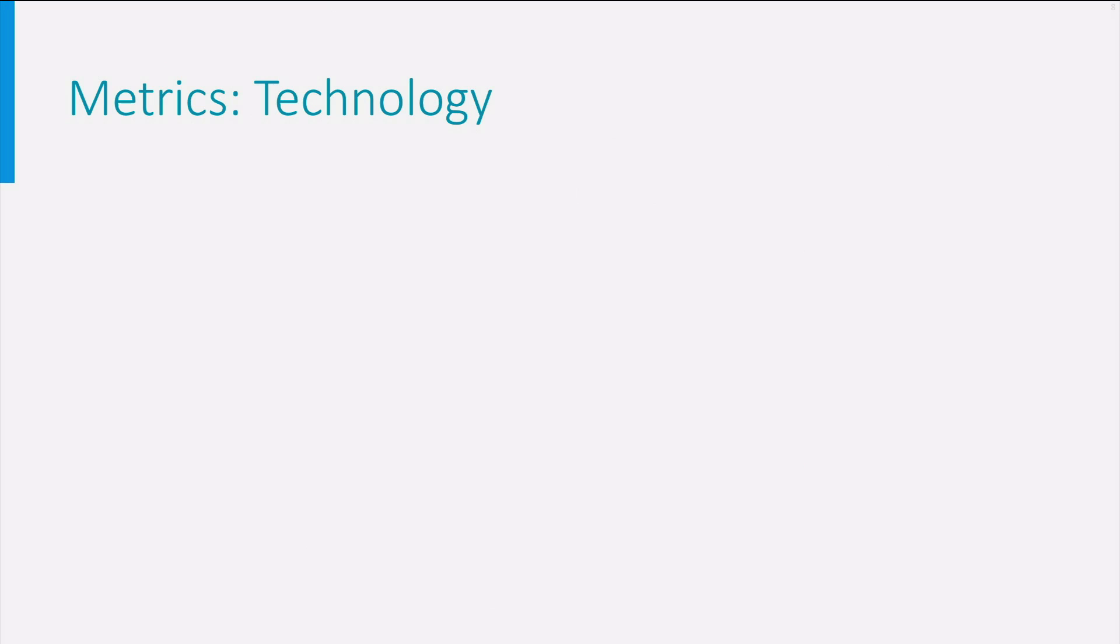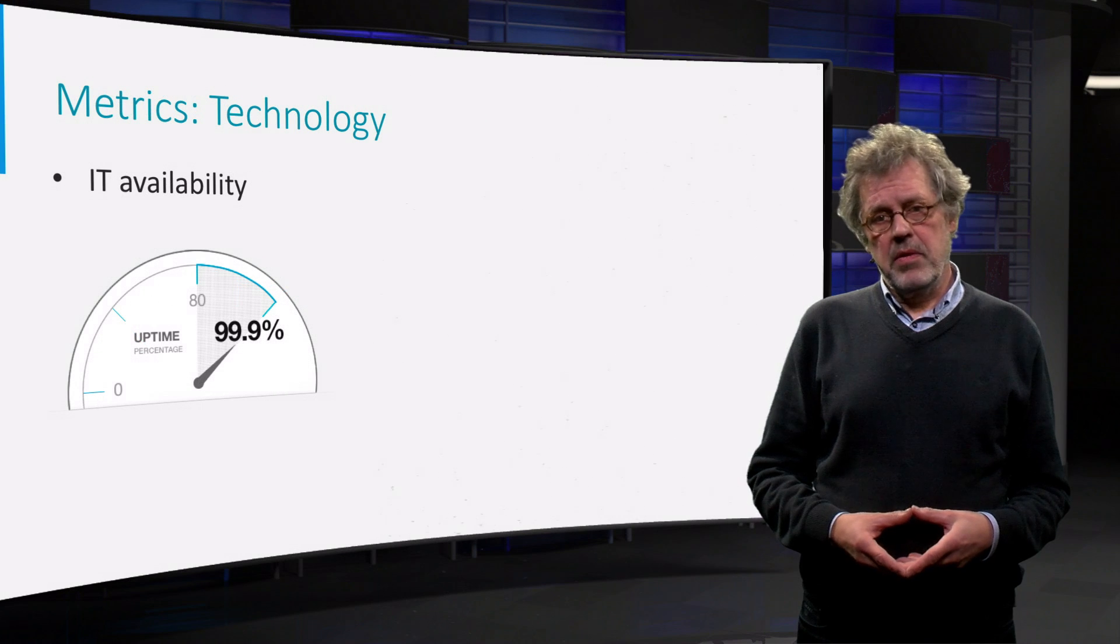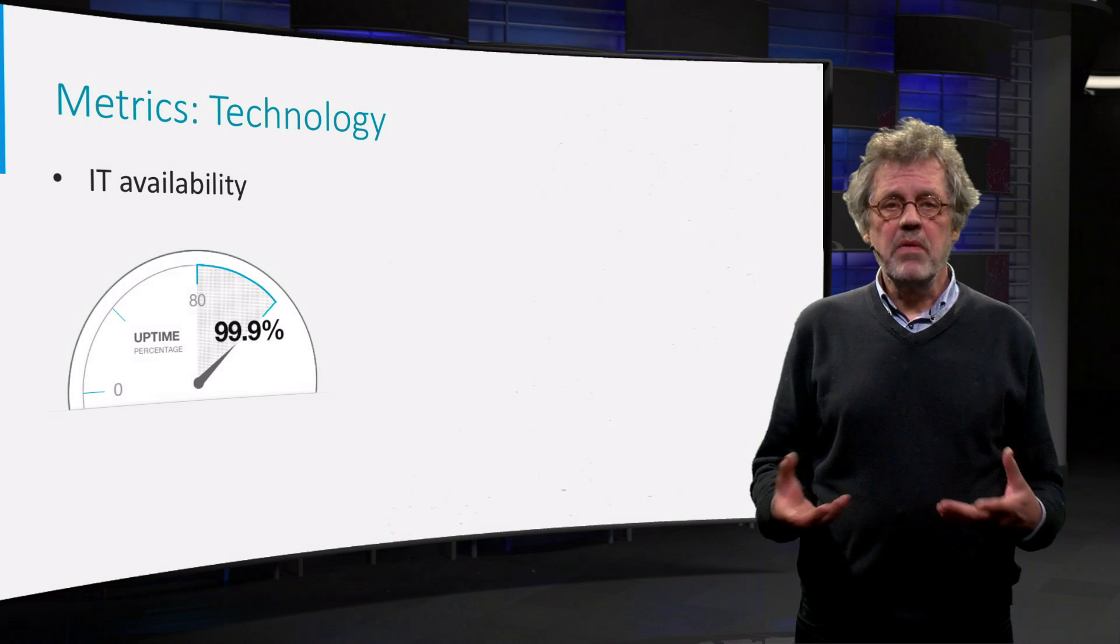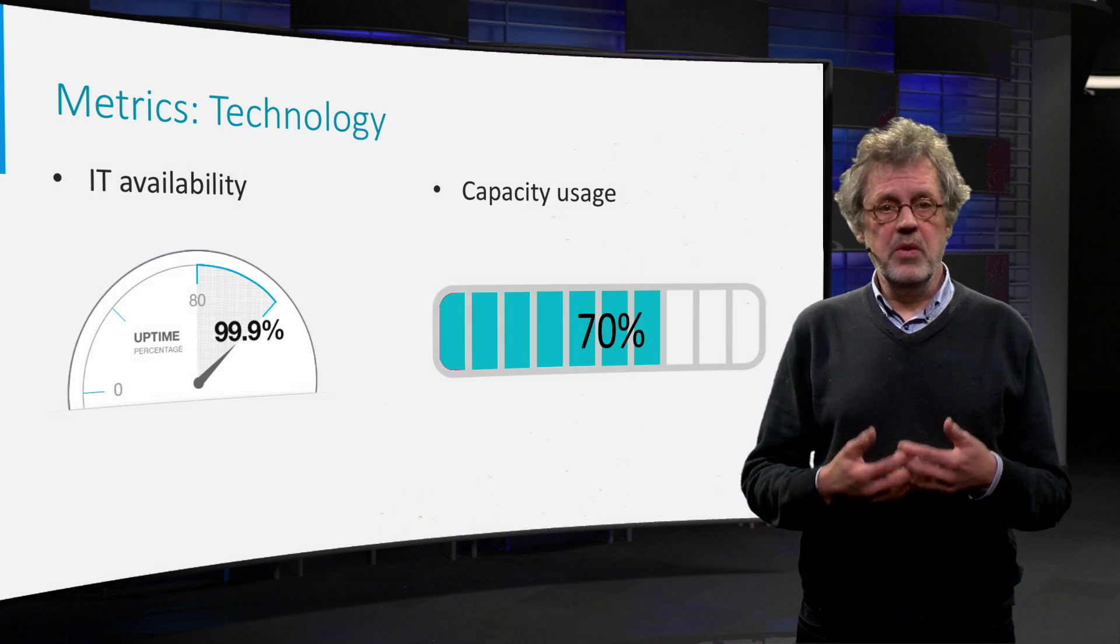Technical metrics can be for example 24x7 availability of IT system. Uptime, the time that the system is available, is another indicator. System reliability for instance is indicated by the mean time between failures, while throughputs say something about capacity used.